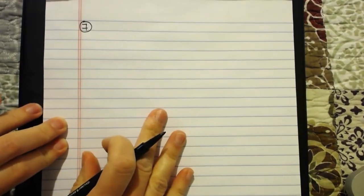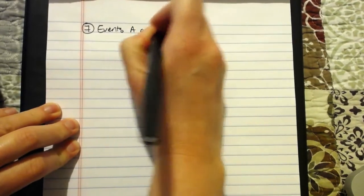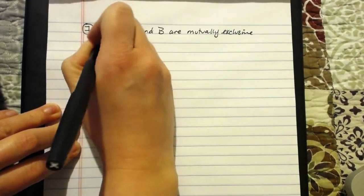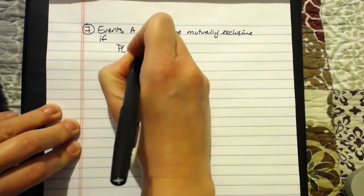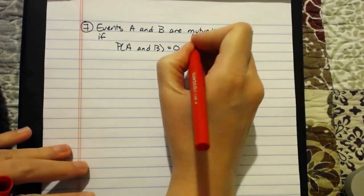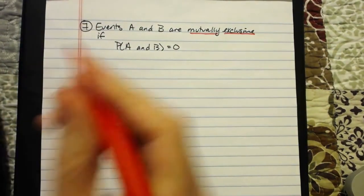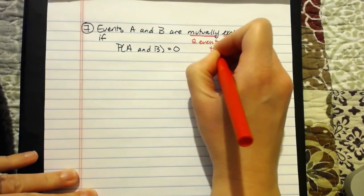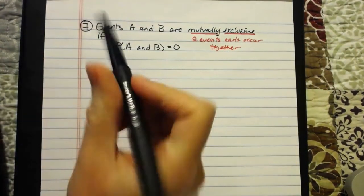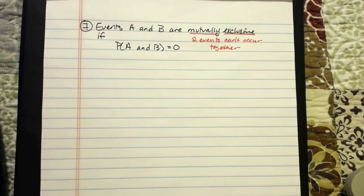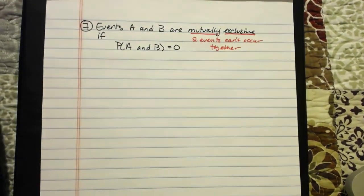Rule 7 is actually a definition — it's less of a rule and more of a definition. It says events A and B are mutually exclusive if the probability of A and B is equal to 0. Mutually exclusive is just another way of saying that two events can't occur together. The probability of A and B occurring together is equal to 0 — in other words, it is not possible for those two events to occur together. They are mutually exclusive by definition.